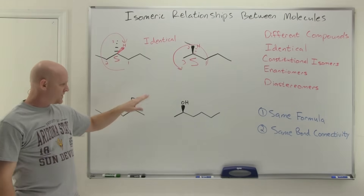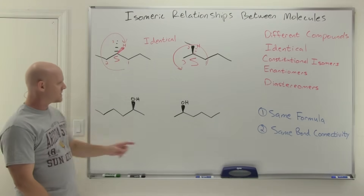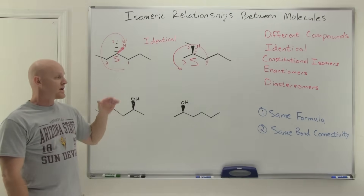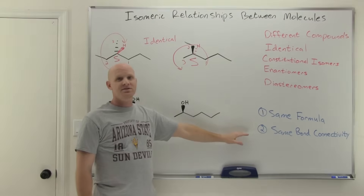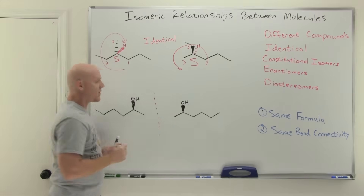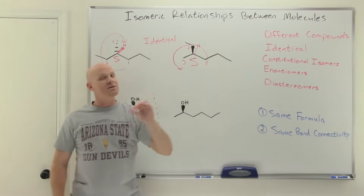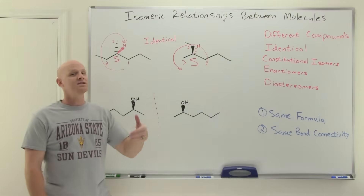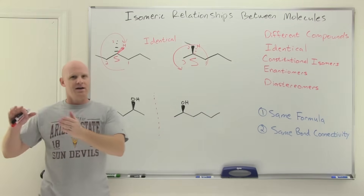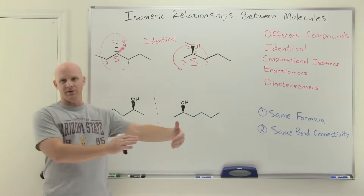Let's look at the next pair. They both have six carbons with a hydroxyl group second from the end, so they have the same formula and the same bond connectivity. One thing immediately obvious is that these are mirror images of each other. A lot of students see mirror images and immediately say 'enantiomers' — but you have to be careful. A compound and its mirror image are enantiomers only if the compound is chiral; an achiral compound and its mirror image are exactly the same thing.